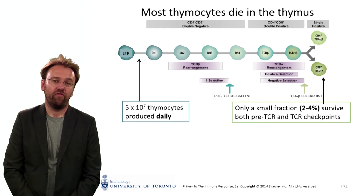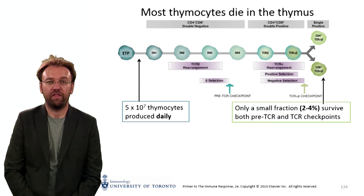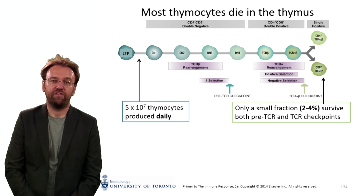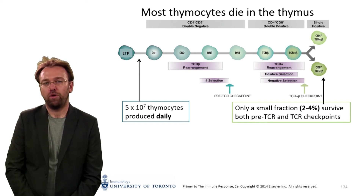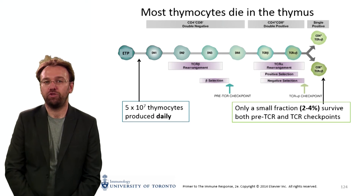Every day, roughly 5 times 10 to the 7 thymocytes seed the thymus. But we need to remember that with both positive and negative selection, only a small proportion of those — less than 5% — are going to make it out as mature T cells.